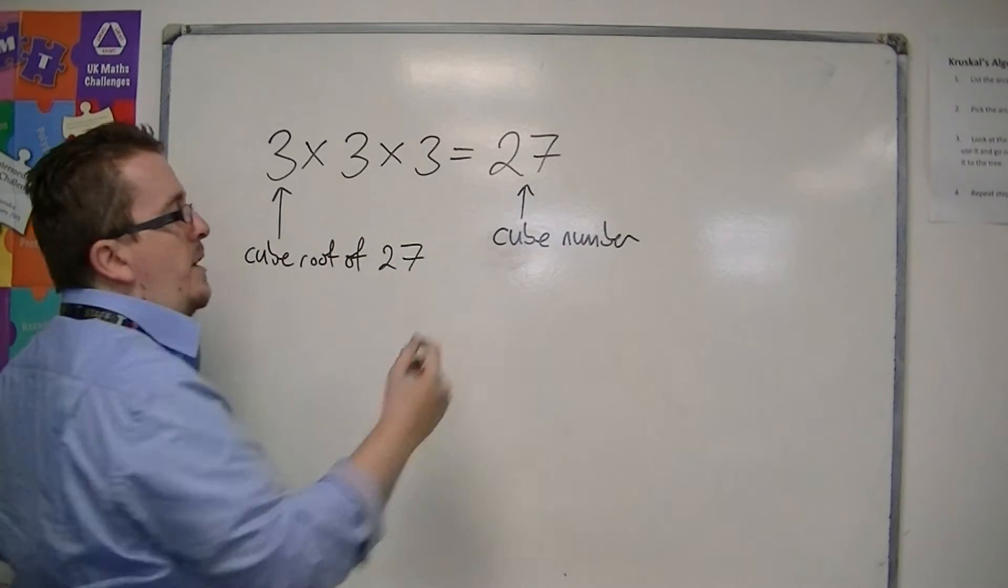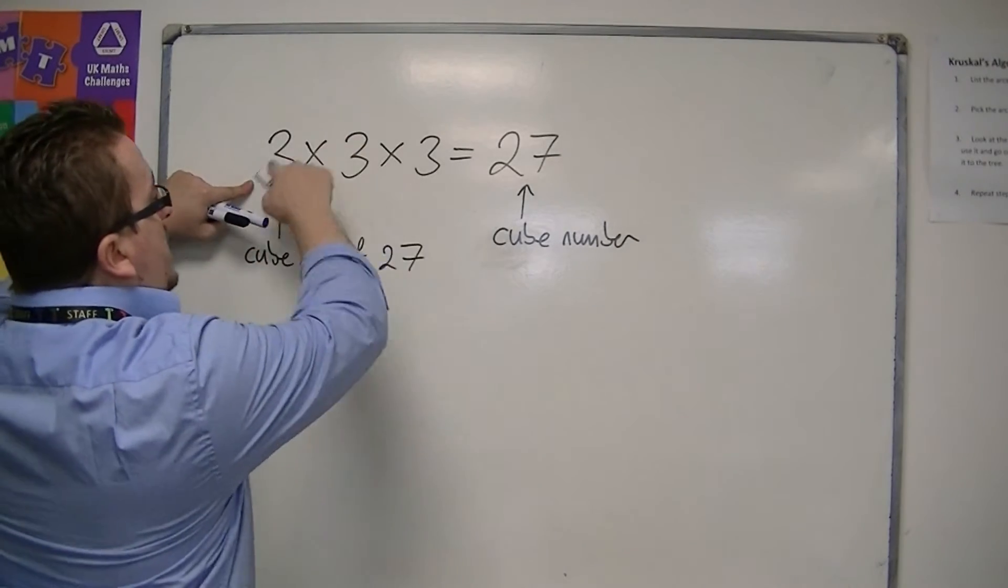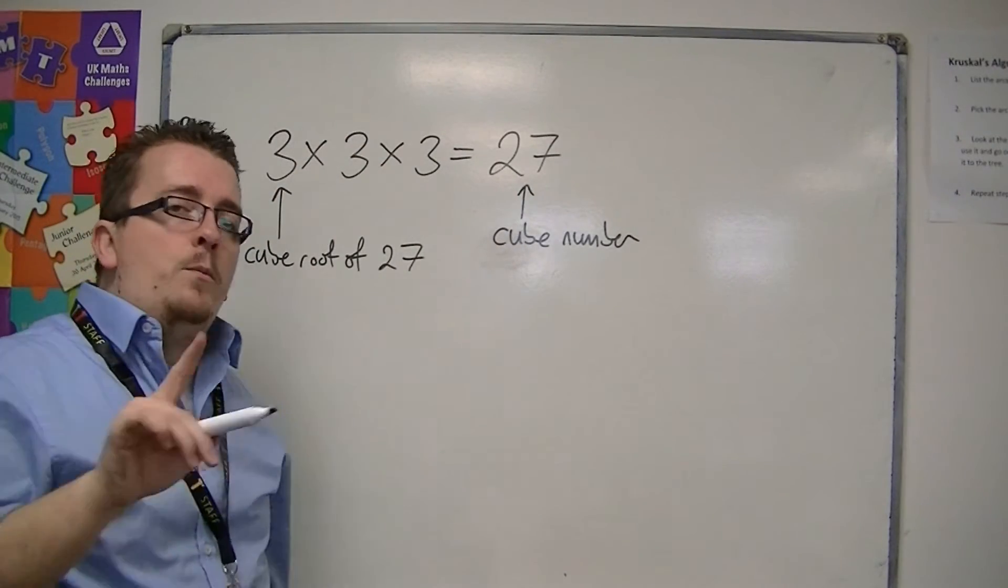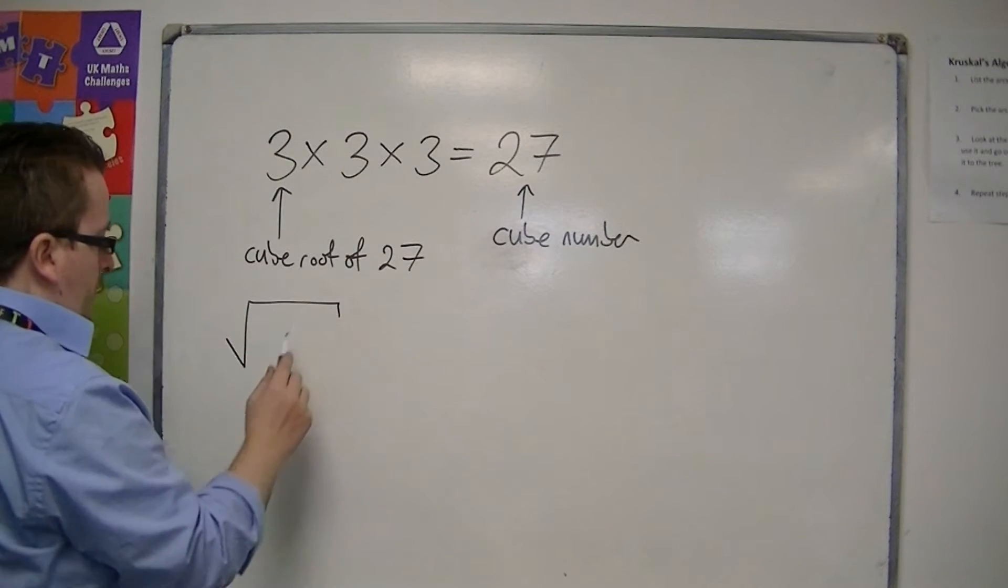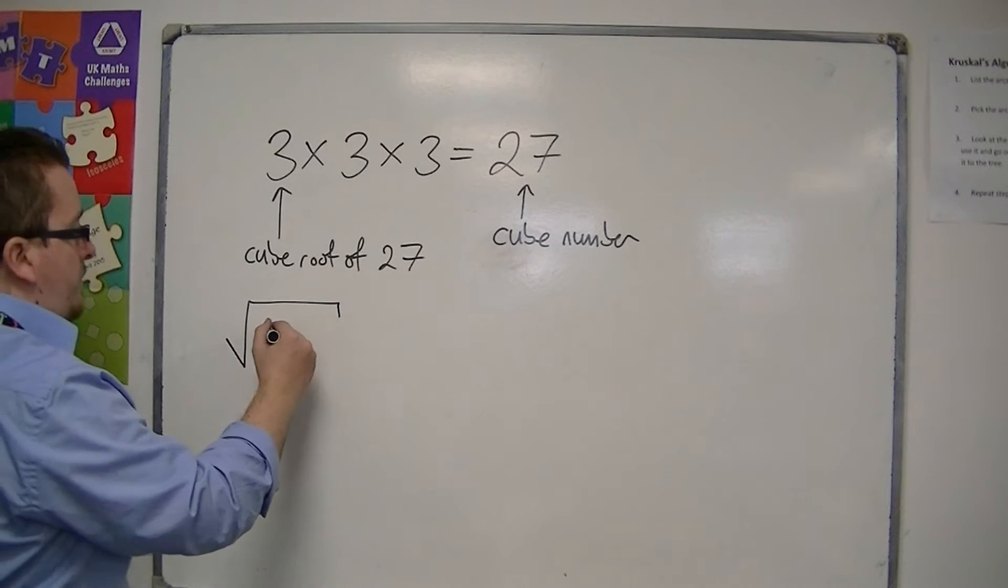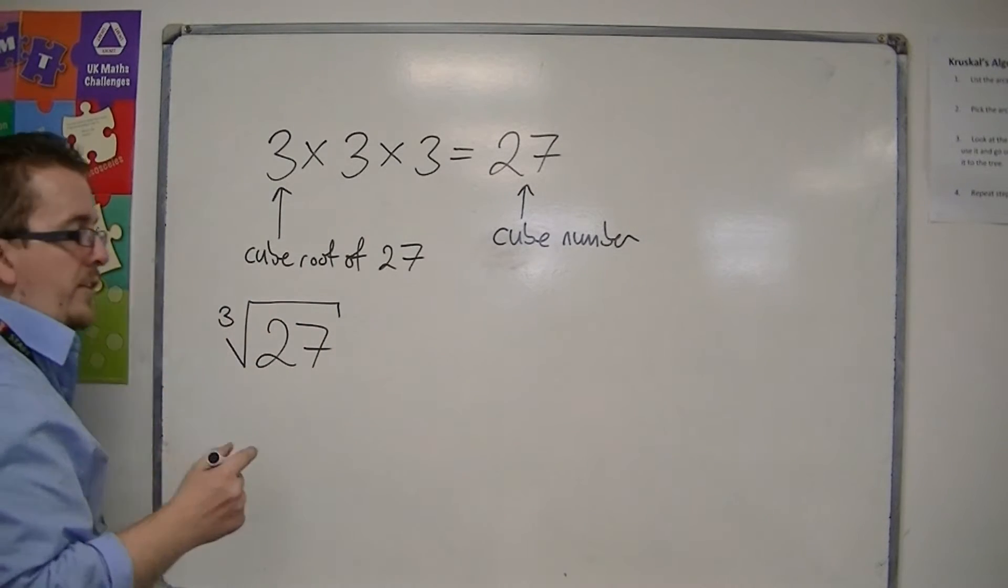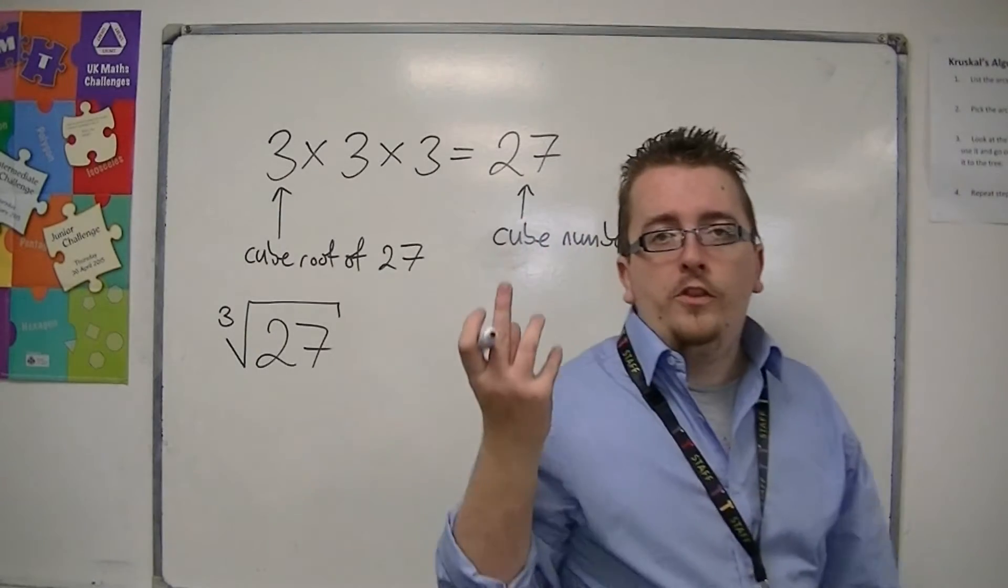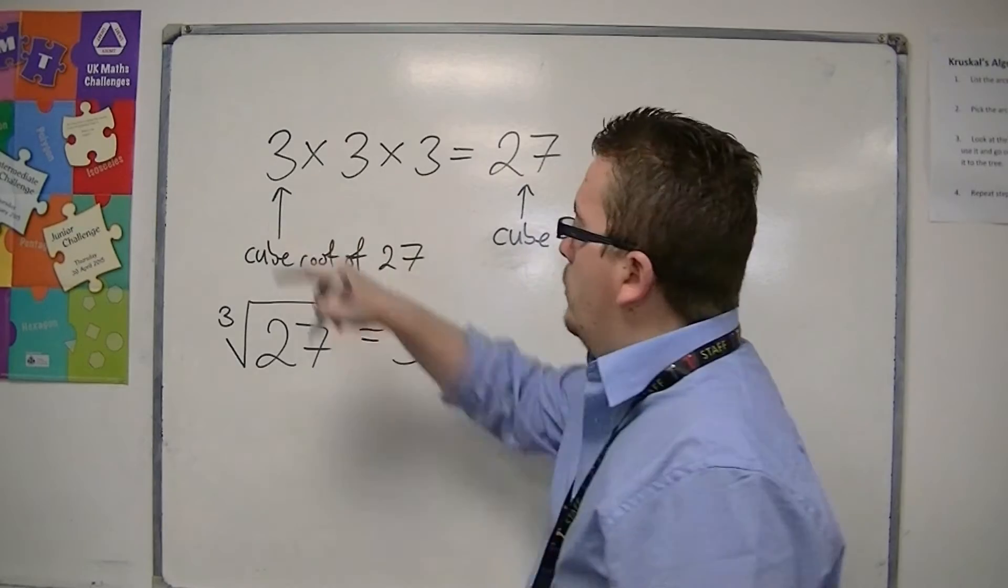By cube root I mean the number that is multiplied by itself 3 times to make 27. We signify this using a symbol that is very closely related to the square root symbol, but we put a 3 here. So we signify that to mean the cube root of 27, and the cube root of 27 is 3.